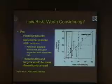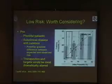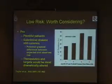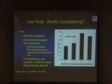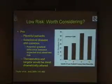Considering whether we should screen low-risk patients, there are several pro-arguments. First, low-risk patients are very plentiful. Subclinical disease is still quite common — data from the PAC project, which I run, show that even people with very low clinical predictive risk still have a lot of subclinical atherosclerosis. Perhaps these low-risk people have the greatest potential to demonstrate a discrepancy between their expected and observed risk, providing an argument for screening them.